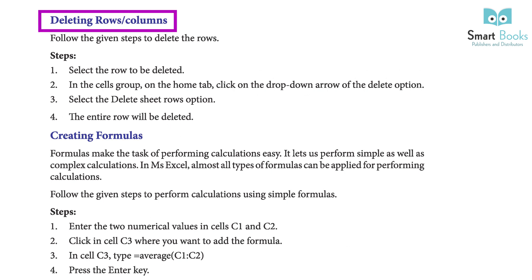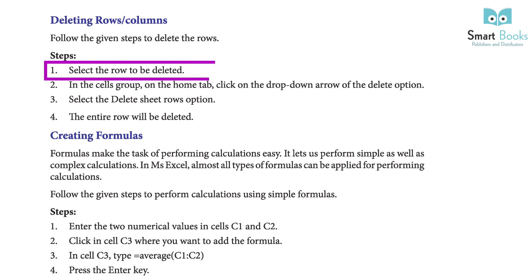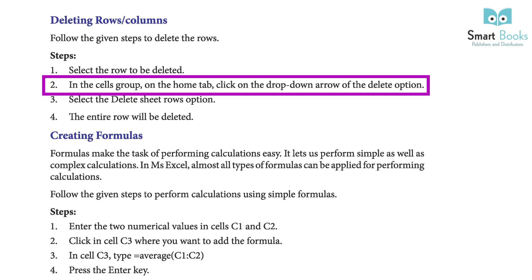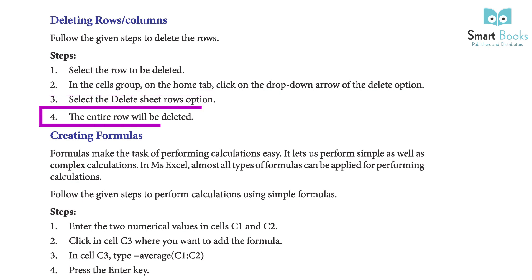Deleting Rows and Columns: follow the given steps to delete rows. Step 1: select the row to be deleted. Step 2: in the Cells group on the Home tab, click on the drop-down arrow next to the Delete option. Step 3: select the Delete Sheet Row option. Step 4: the entire row will be deleted.